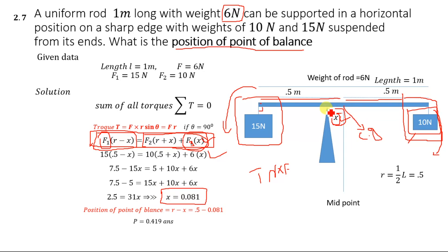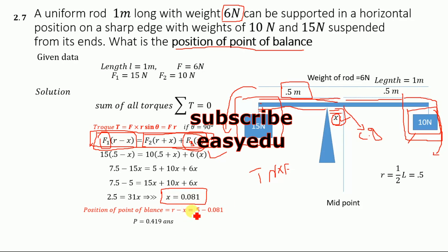The total length of the rod is 1 meter and the midpoint is at 0.5 meter. By subtracting x from 0.5, we get the distance from the end with the 15 newton weight to the point of balance: r − x = 0.5 − 0.081 = 0.419 meter. That is the required answer. Thank you for watching, and don't forget to subscribe for more videos.